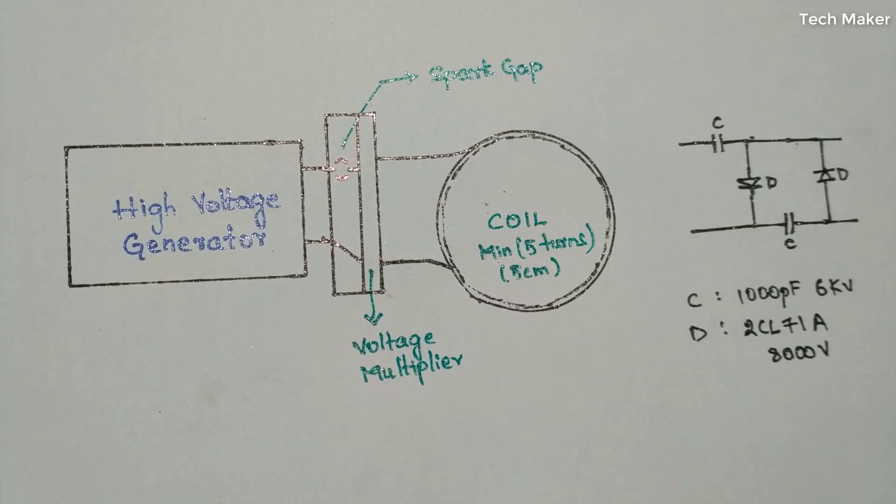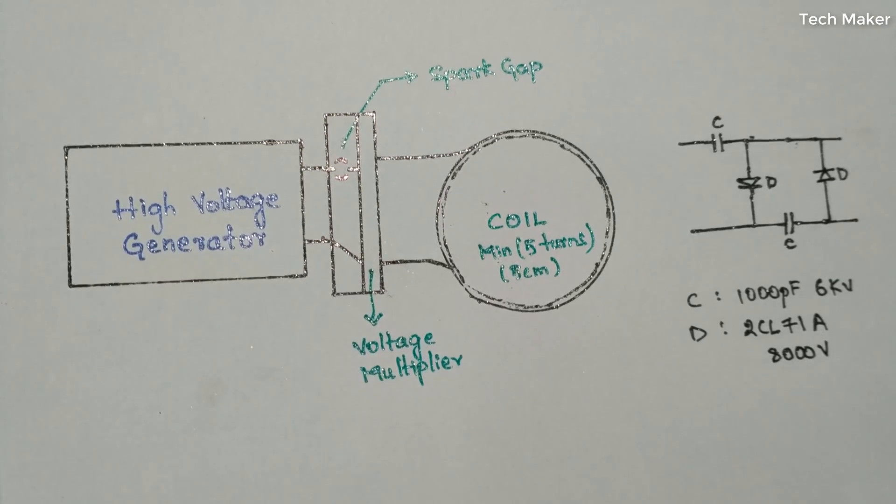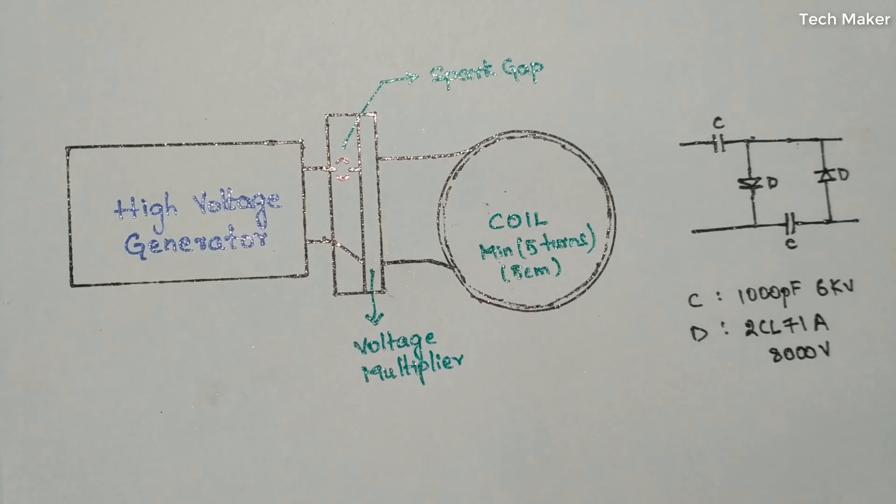Now I will explain the mechanism of the EMP jammer using this schematic. The EMP jammer consists of a high voltage generator and a coil. In between both there will be a spark gap. This spark gap will make a major role here.